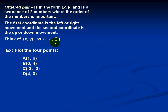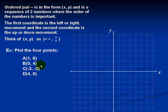Example: plot the four points. We shall plot the first point, which is A: 1, 6. Our point B is 0, 4. Our point C is negative 3, negative 2. And point D is 4, 0.